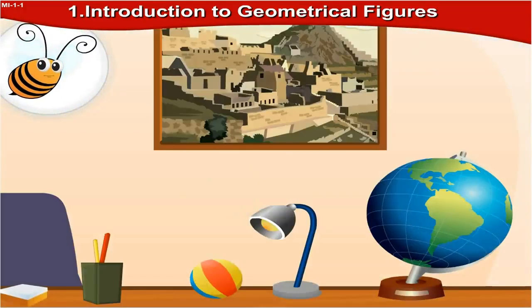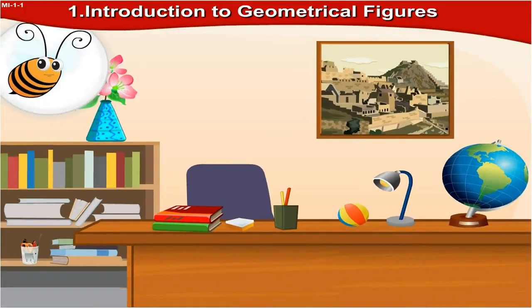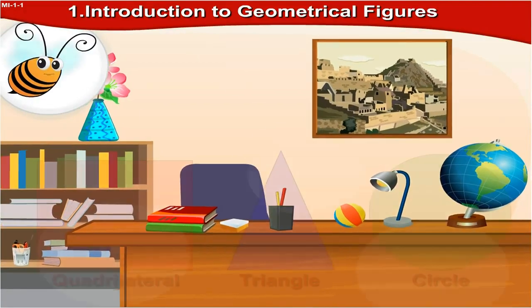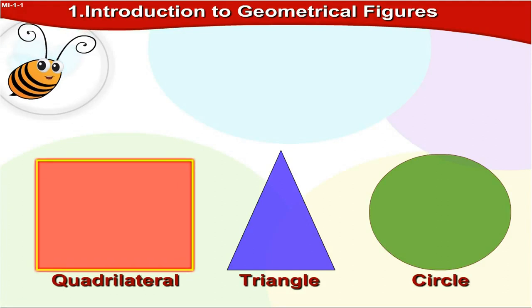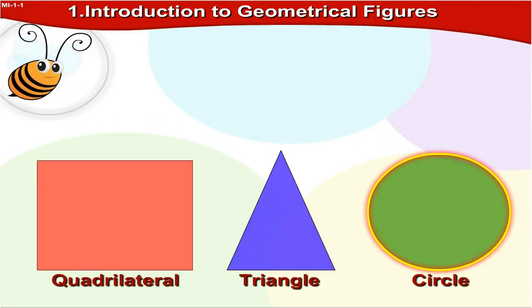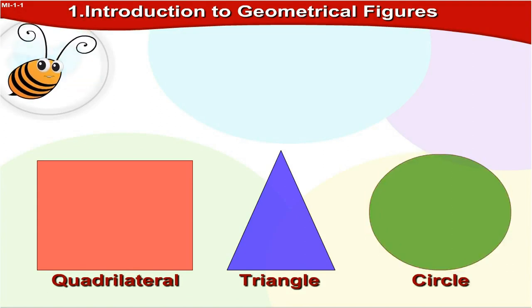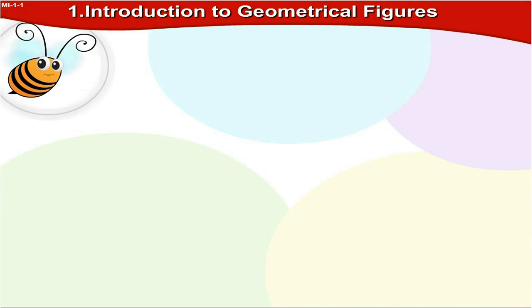Friends, you must have seen many things at your home, school and in the surroundings. Everything has different shapes. Some are in square shape, some in triangular shape and some in circular shape. You already have studied about these shapes. These shapes are called geometric figures. So let us revise these shapes.